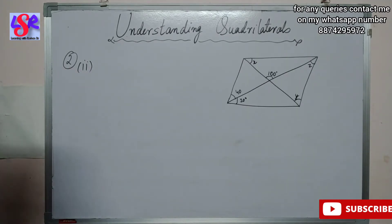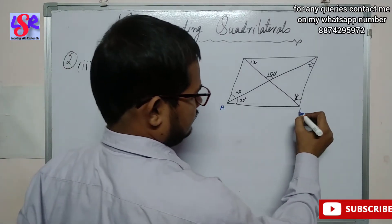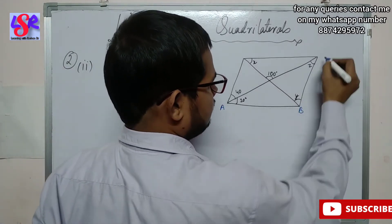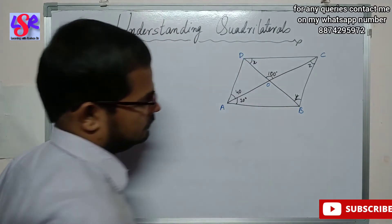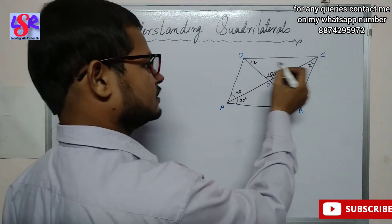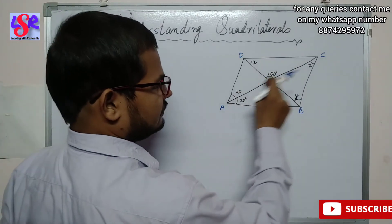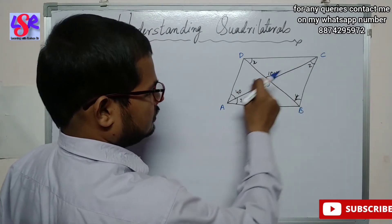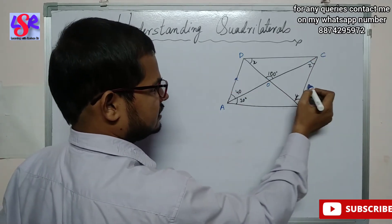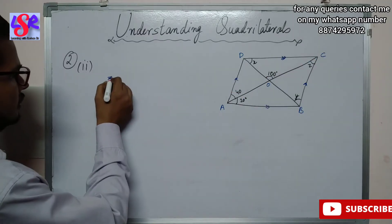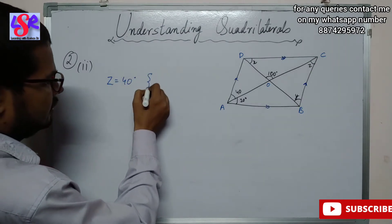Now let us move to the second part of this question. Here we have a parallelogram; let us name it A, B, C, D, and O as the intersection of diagonals. We have to find X, Y, and Z. First, Z equals 40 degrees by interior alternate angles, as this side is parallel to the other. So Z equals 40 degrees as the interior alternate angle.